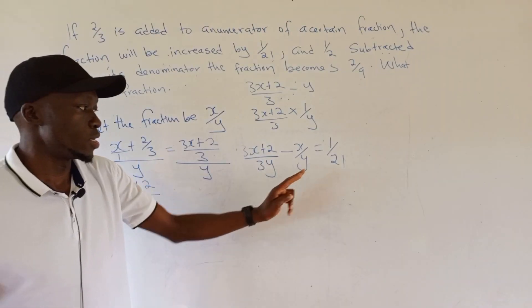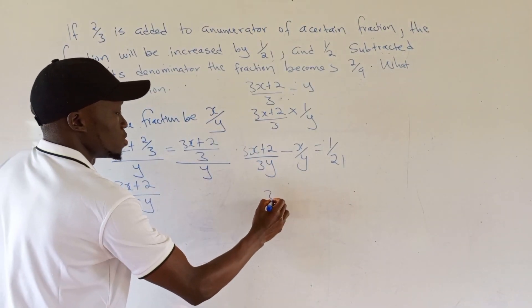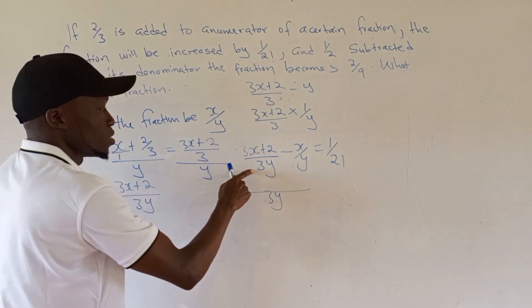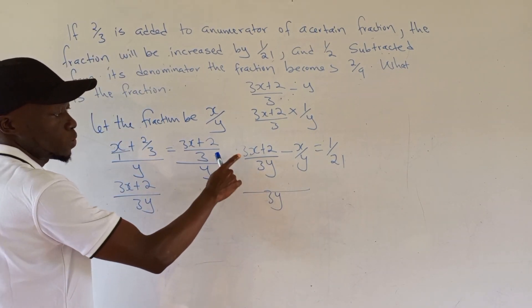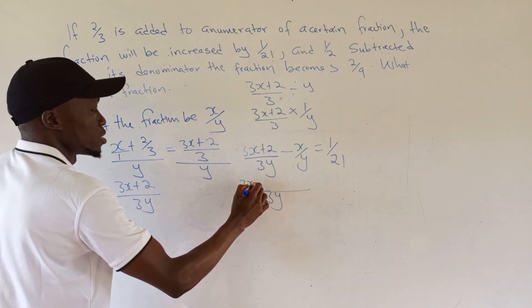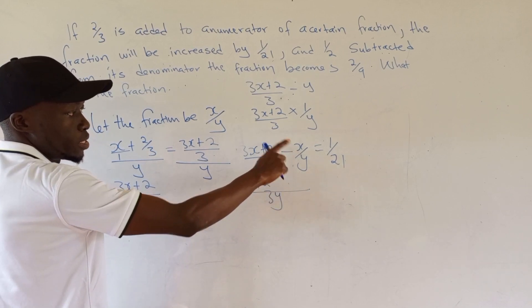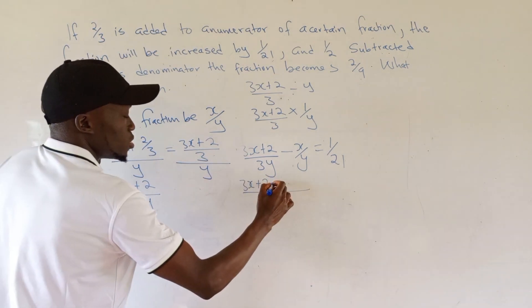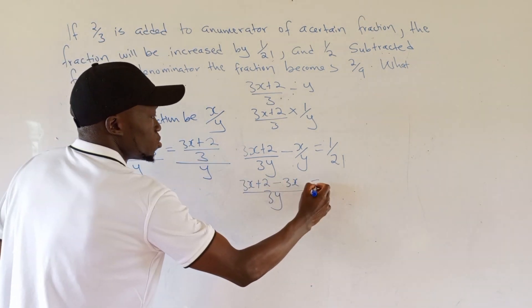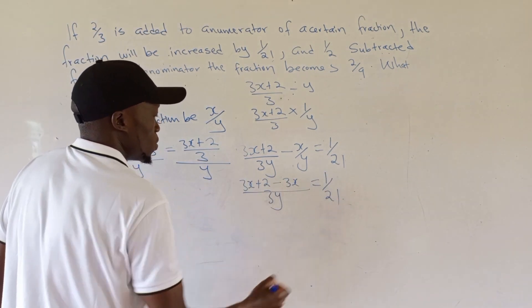The LCM of 3y and y is 3y. So 3y goes to 3y once, multiply by the numerator: 3x + 2. Then y goes to 3y three times, multiply by x: minus 3x equals 1/21.